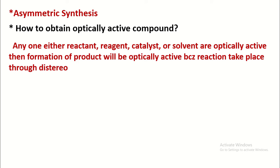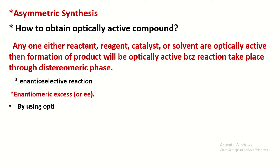We know that diastereomers have different physical and chemical properties. Such a reaction is also called an enantioselective reaction. It is expressed in terms of enantiomeric excess.